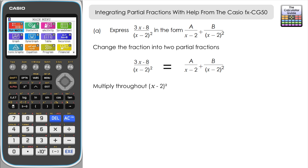Writing out what we've got: 3x − 8 is just the numerator from the initial fraction. Multiplying by (x − 2)² cancels the denominator on the left. For the term A over (x − 2) multiplied by (x − 2)², one bracket cancels, leaving A(x − 2). For B over (x − 2)² multiplied by (x − 2)², we're just left with B. So we get: 3x − 8 = A(x − 2) + B.